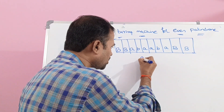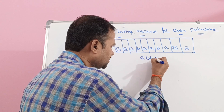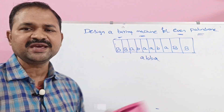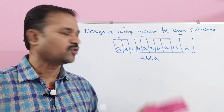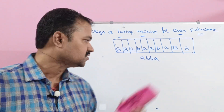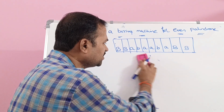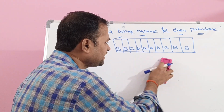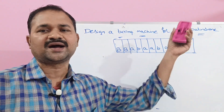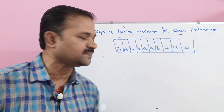We can take another example: ABBA. The reverse of ABBA is ABBA only, and the length of ABBA is 4, so this is also called an even palindrome. We can take any number of such strings. Let us now see the logic involved while designing the Turing machine.